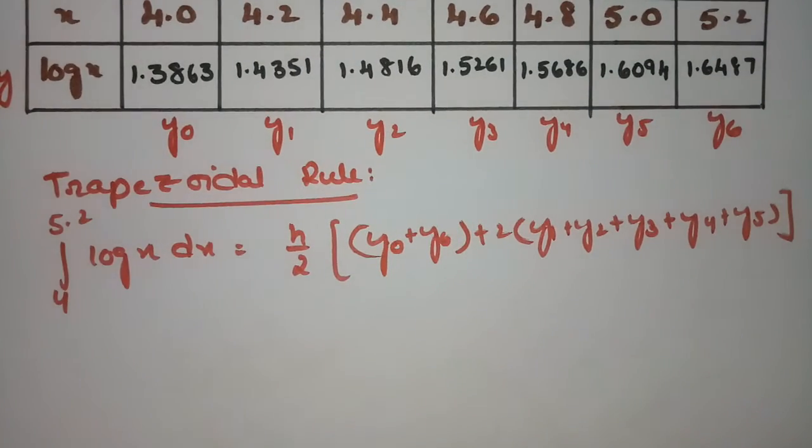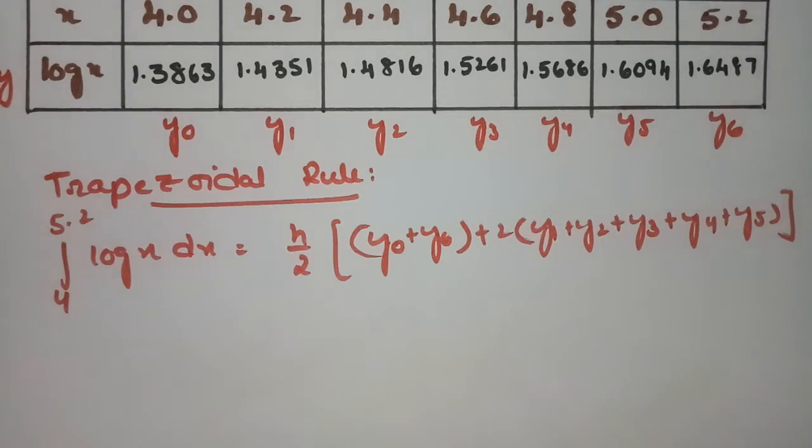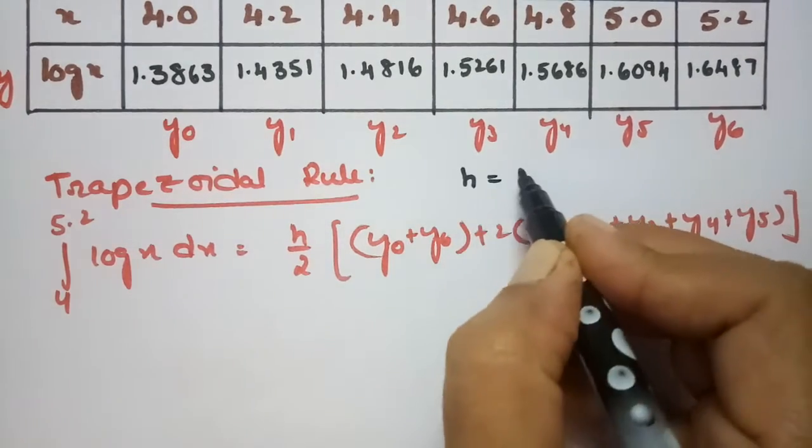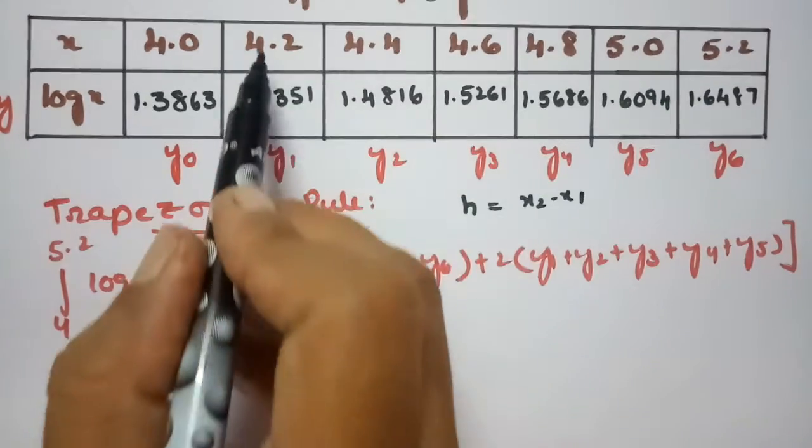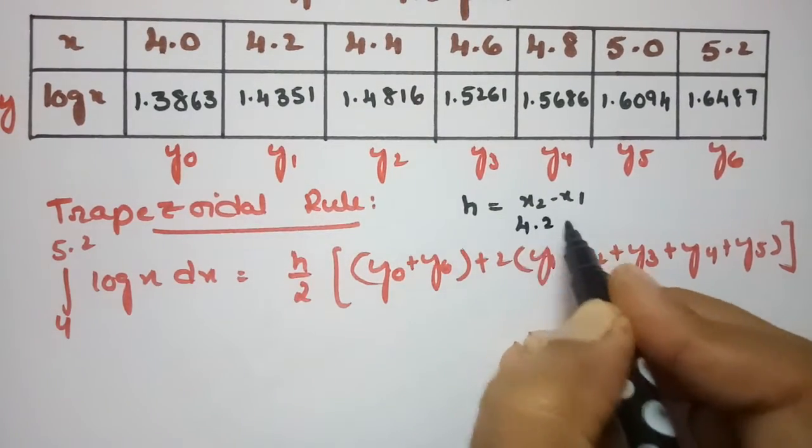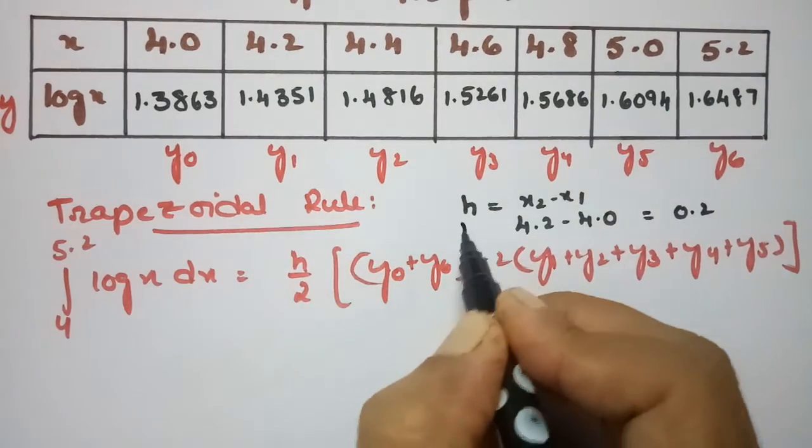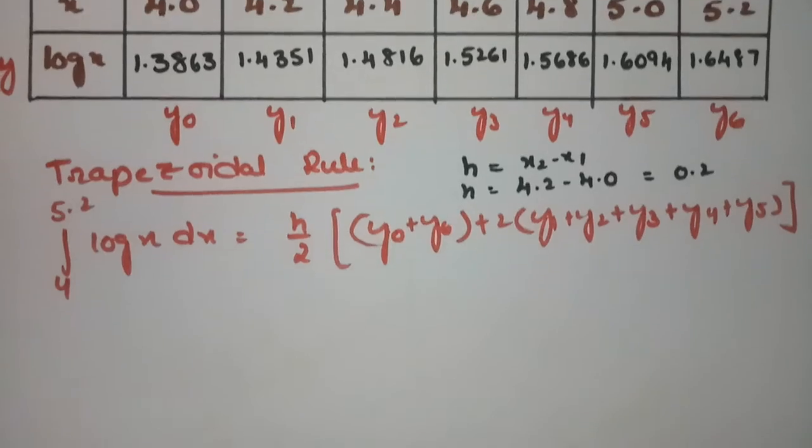So now we have to substitute all the values here. All the values are ready here and h value is nothing but x2 minus x1. This is 4.2 minus 4.0 which is nothing but 0.2. So we got the h value as 0.2.